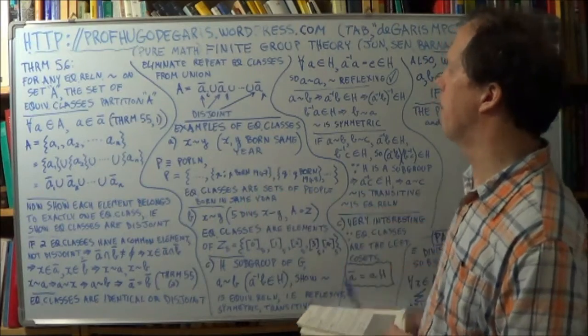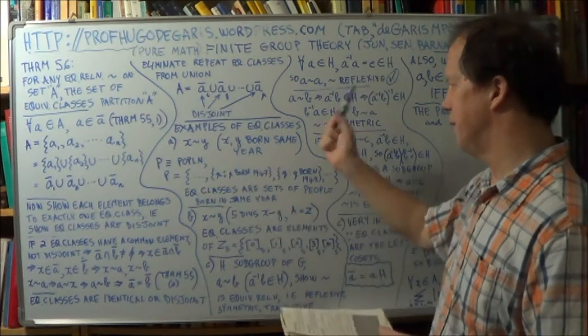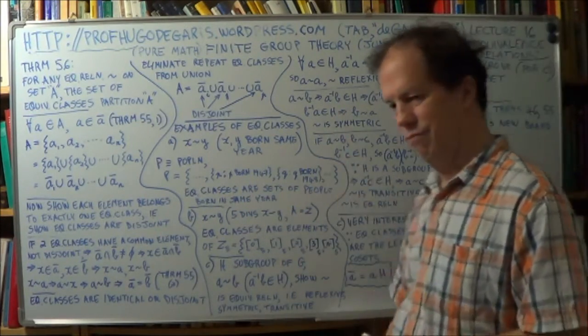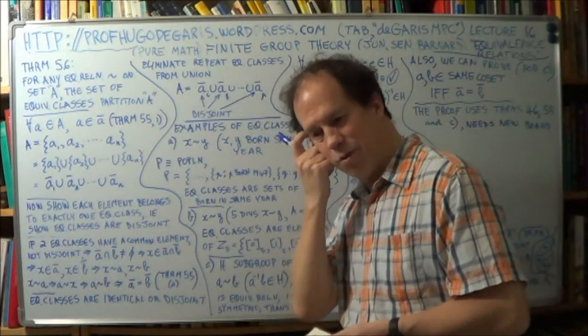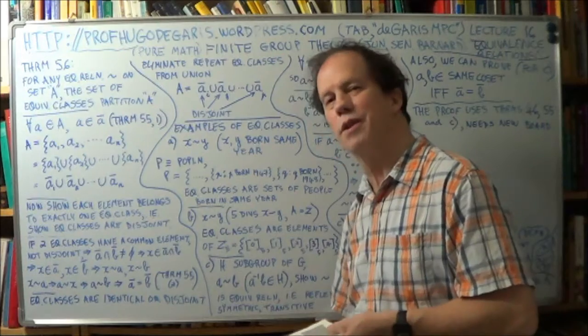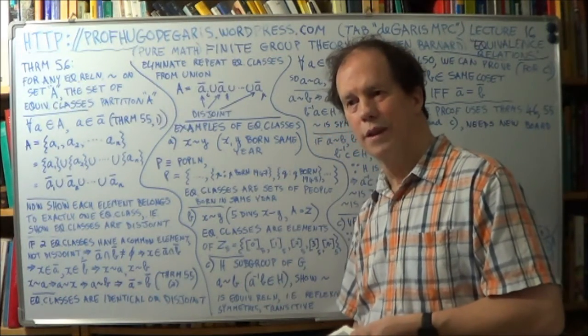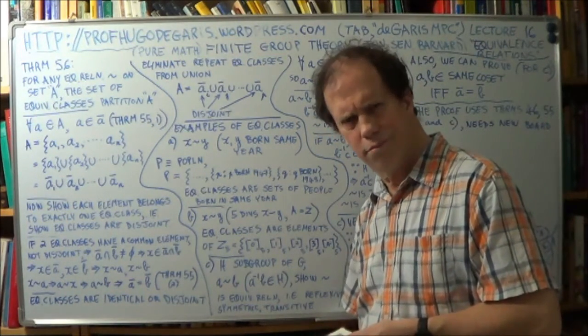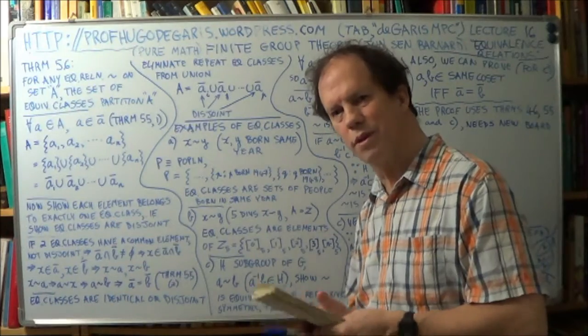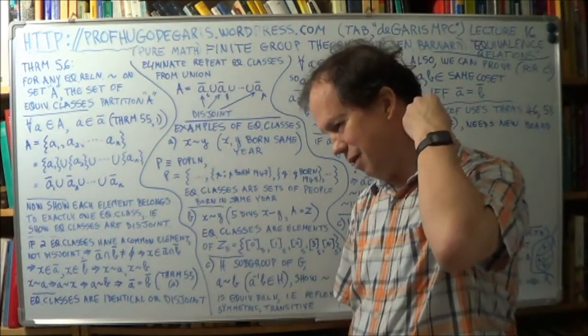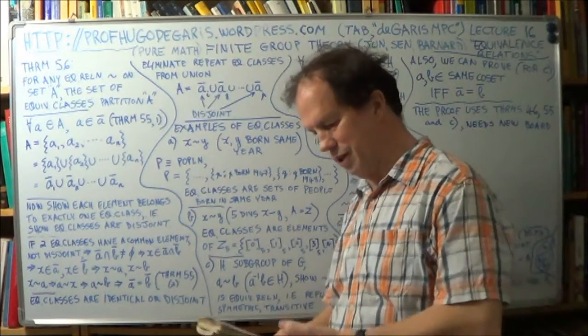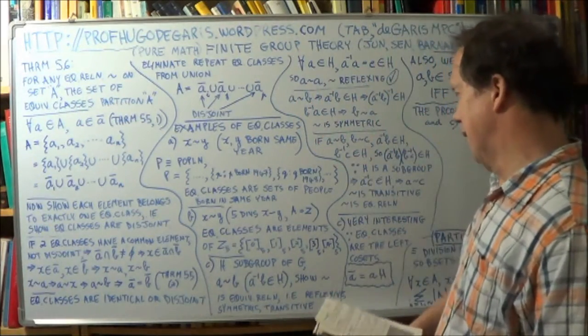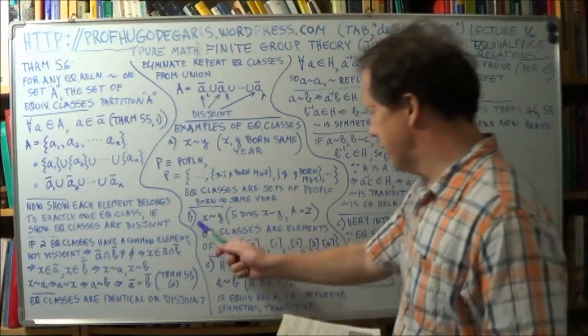Okay, so the equivalence classes are the subset of people born in a given year, right, for each year. So there will be, I don't know, 123 or whatever different equivalence classes. 123, that's the world record. This is some French woman, Clement, she lived 123. That's the world's oldest person in history and she's in the Guinness Book of Records.